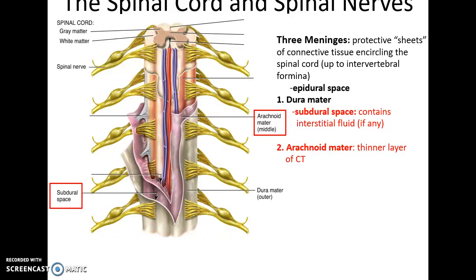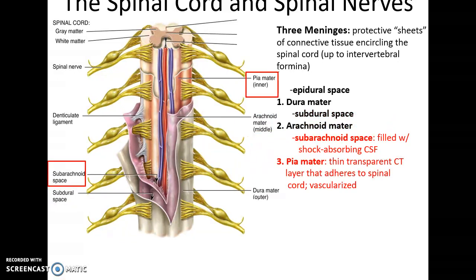The next deepest meninges is the arachnoid mater. The arachnoid mater is often fused with the dura mater. It is a thinner layer of connective tissue. Sometimes there will be a subdural space if some sort of interstitial fluid or blood builds up between the dura mater and arachnoid mater. The third meninges is the pia mater. The pia mater is very thin and transparent and lies directly on the spinal cord, and many blood vessels run along the pia mater.